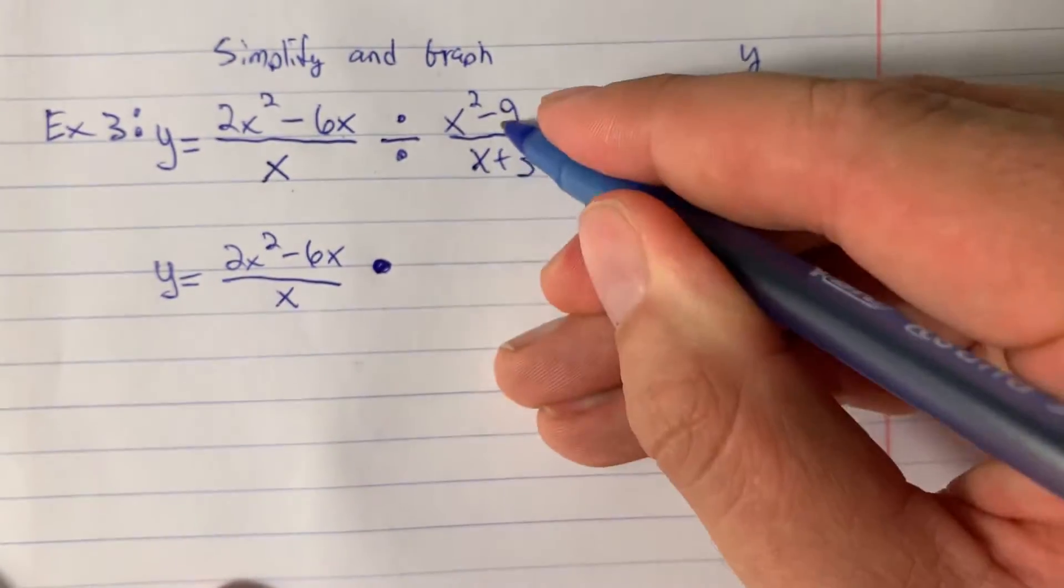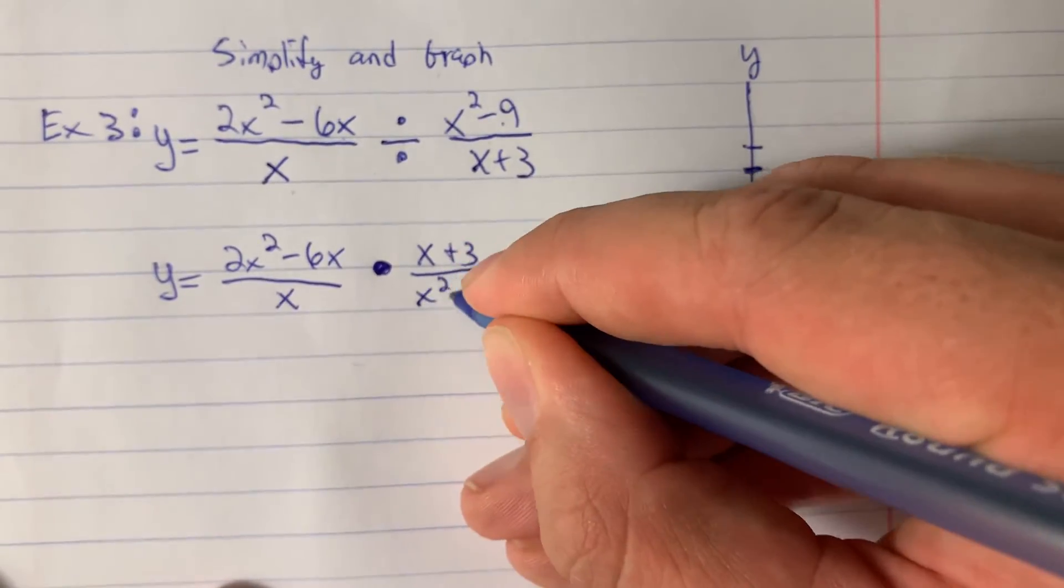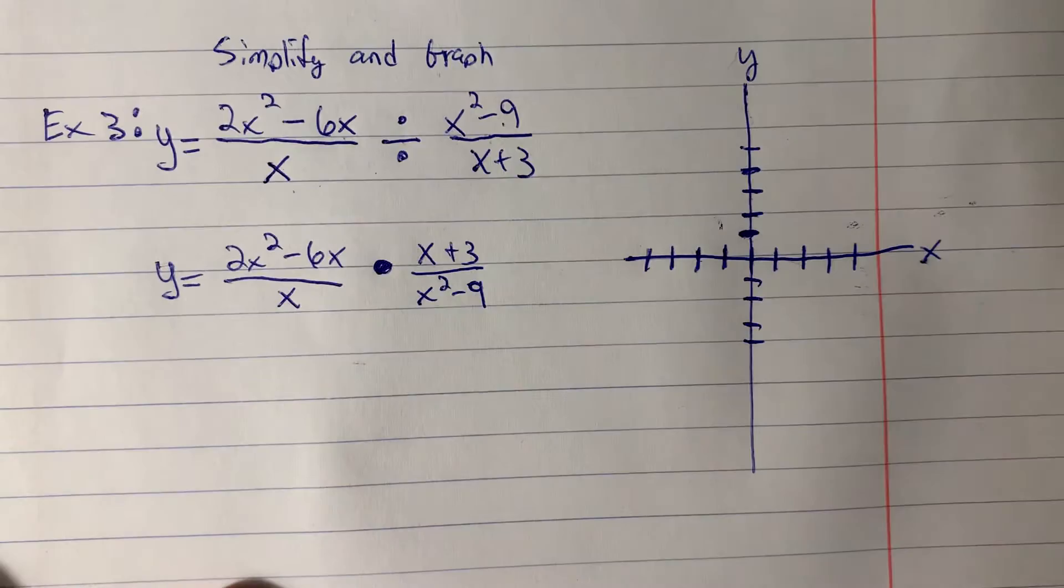And we're going to multiply by the reciprocal of this. This is x plus 3 divided by x squared minus 9. And now we've changed this into a multiplying problem.